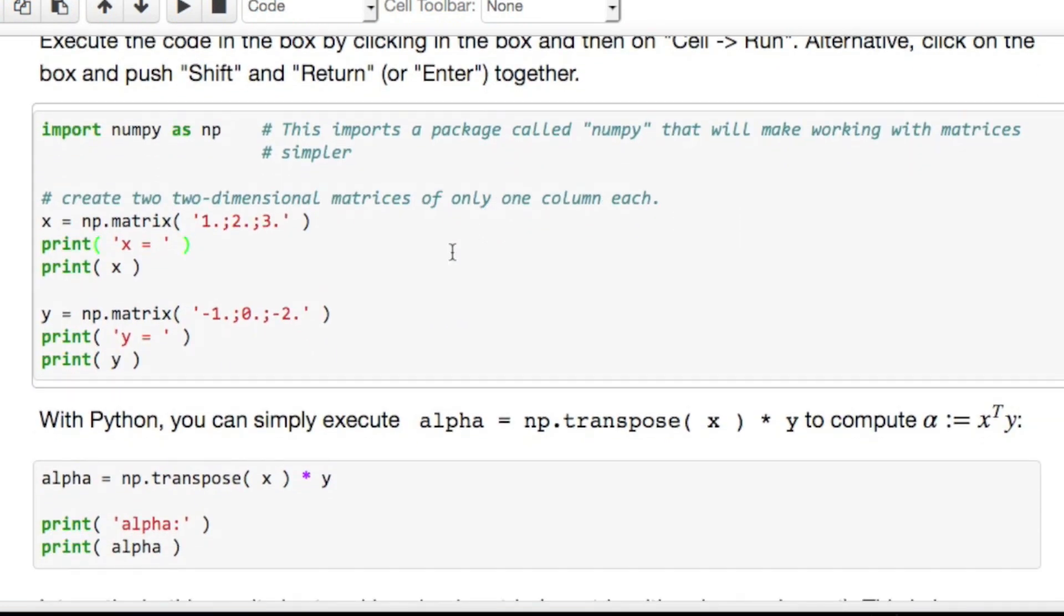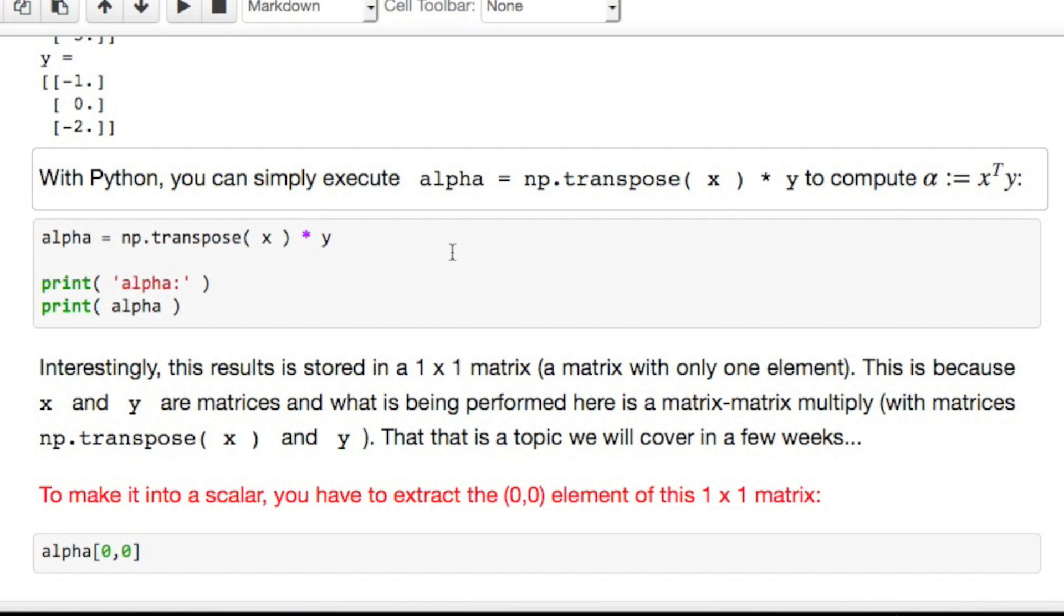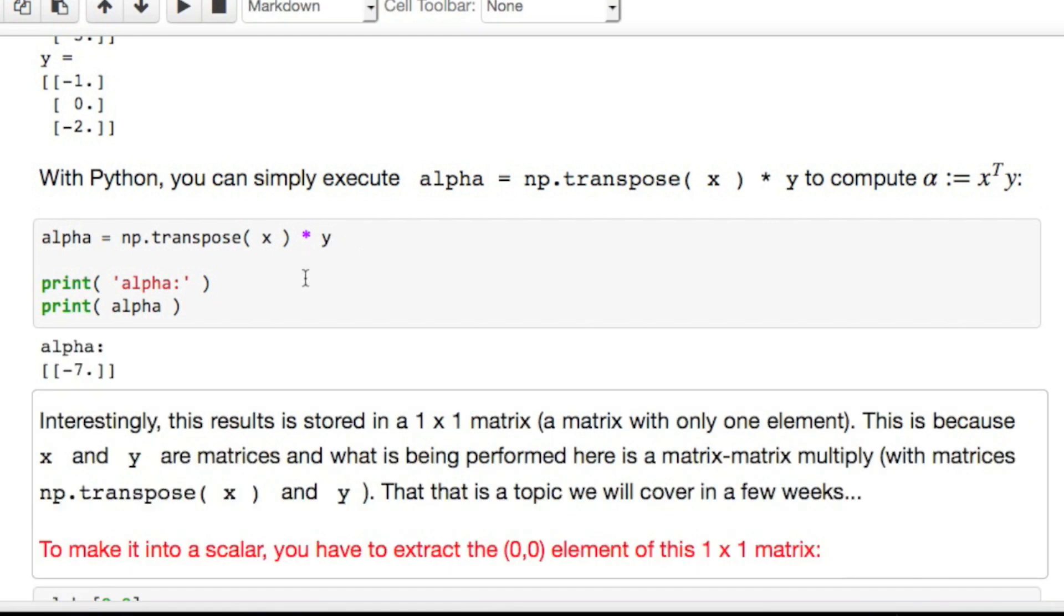The first executable box creates vectors x and y. With Python, or rather with NumPy, you can do x transpose y by using the transpose routine on x and then multiplying the result times y. Now what happens here is that both x and y are viewed as a matrix, and this performs a matrix-matrix multiplication, which we haven't talked about yet. But NumPy does all the magic for you, and when you do this, you get the right answer.